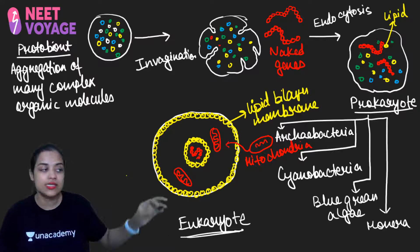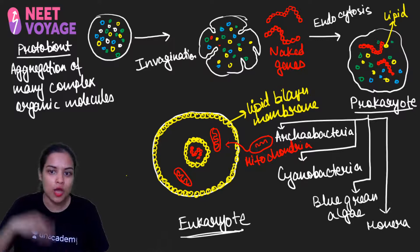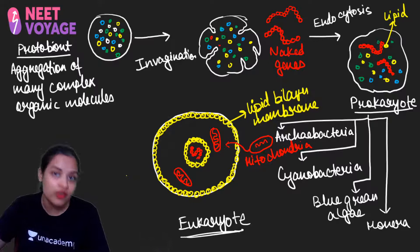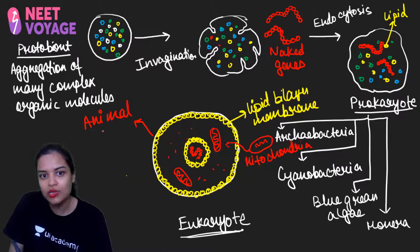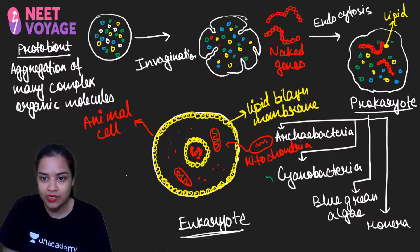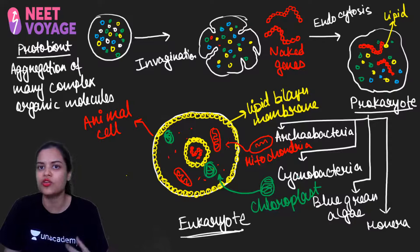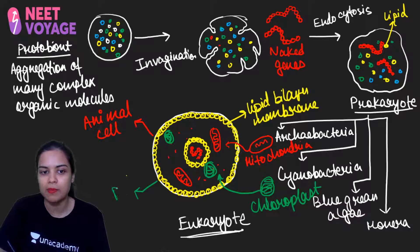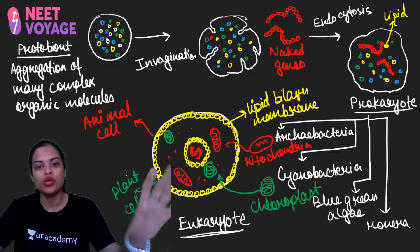Because archibacteria entered by endocytosis and became a cell organelle — that is mitochondria — we future eukaryotes are all sharing common genes from a very ancient archibacteria. Whether it is an insect, a polyp, a human being, or a monkey, we all share these common genes. Similarly, cyanobacteria — which is capable of photosynthesis — entered by endocytosis and formed the chloroplast. That is why chloroplast also has its own DNA.